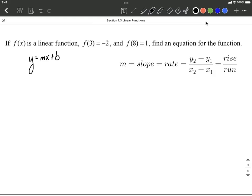I've gone ahead and given you the slope formula over here on the right-hand side. I'm going to use this version, the y2 minus y1 over x2 minus x1. Now the information that we've been given is actually two ordered pairs. That's an x value and a y value, input and output. So one ordered pair is going to be 3, negative 2. The other ordered pair is going to be 8, 1.